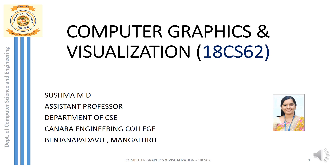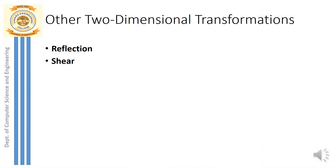Hello Learner, greetings of the day. Let us discuss the other 2D transformation techniques. We have already seen three transformation techniques: translation, rotation, and scaling. The other two-dimensional transformation techniques are reflection and shear. We will see one by one what reflection is, and later in detail what shear is.